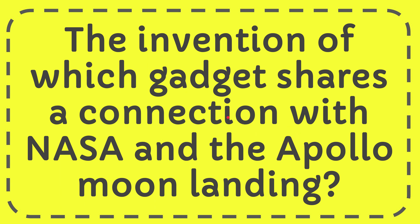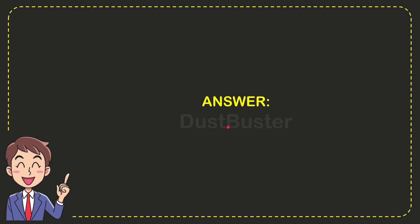In this video I'm going to give you the answer to this question. The question is: the invention of which gadget shares a connection with NASA and the Apollo moon landing? The answer to this question is the Dust Buster.